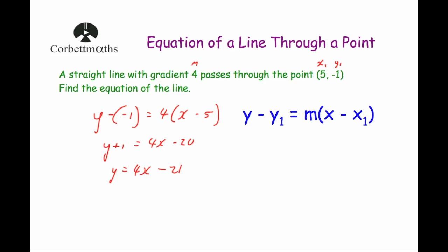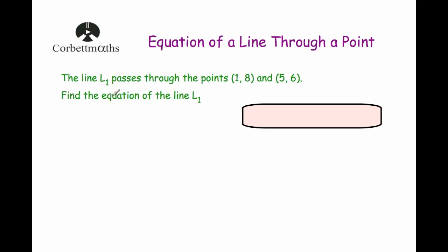Our second question says: the line L1 passes through the points (1, 8) and (5, 6). Find the equation of the line L1. This question looks a little bit different because we haven't been given the gradient. Because we've been given two points that the line passes through, we can work out the gradient by using the formula m equals y2 minus y1 over x2 minus x1.